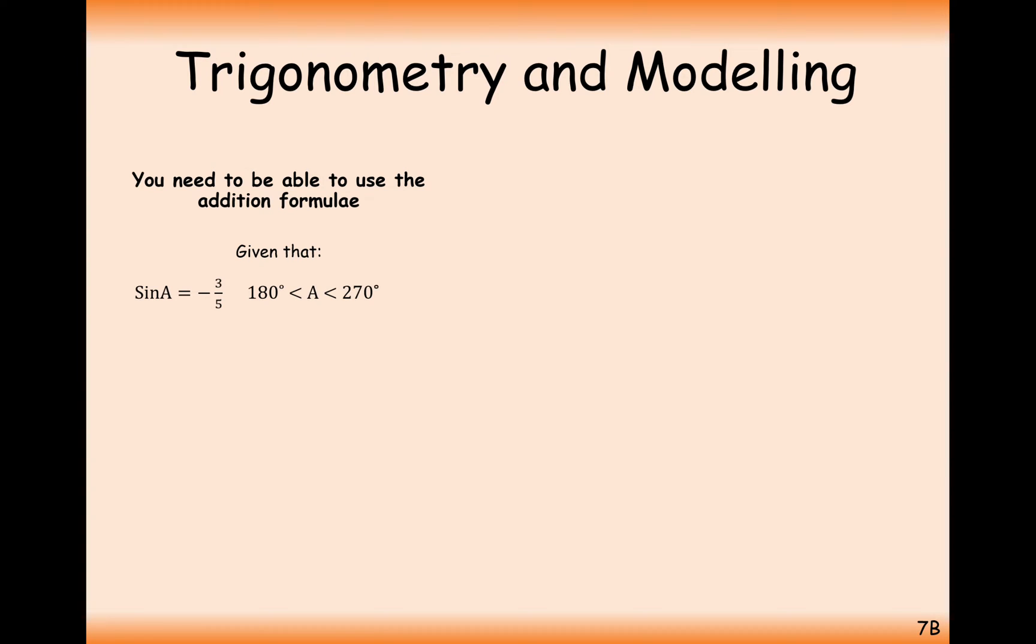It's one of these ones where we've got sine A equals minus 3 over 5 and A is an angle between 180 to 270. We've got cosine B which is minus 12 over 13, B being an obtuse angle. And what does that mean? That means it's in between 90 to 180.